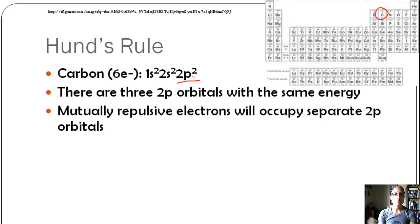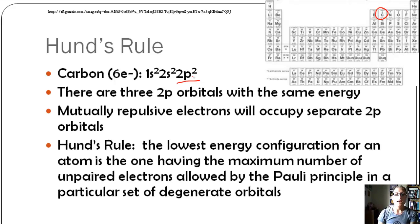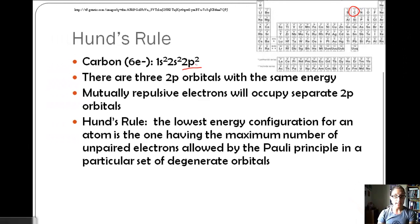Mutually repulsive electrons will occupy separate 2p orbitals. Remember, electrons don't want to connect, they want to repel, and they spin in opposite directions. They're going to fill separate 2p orbitals if they can.